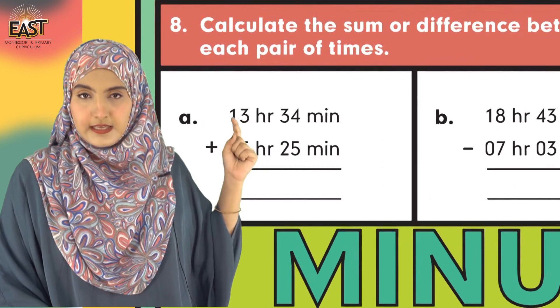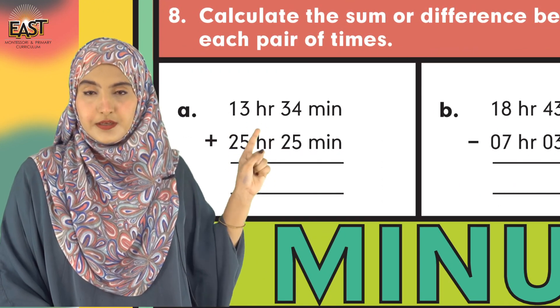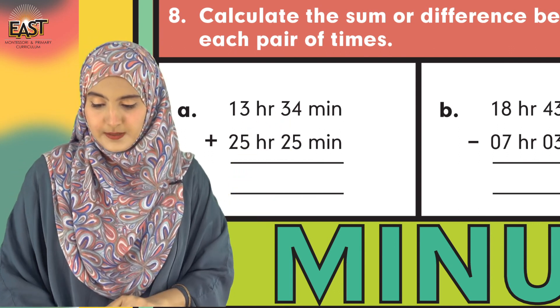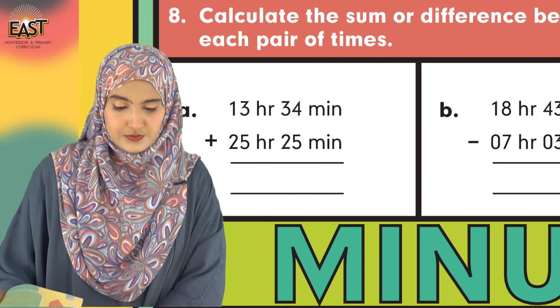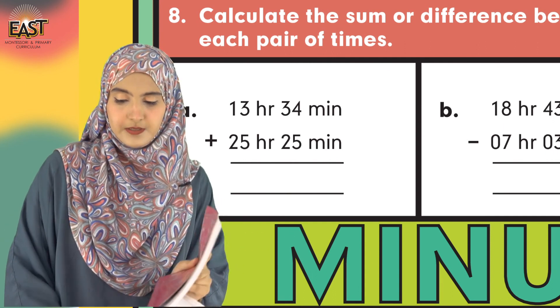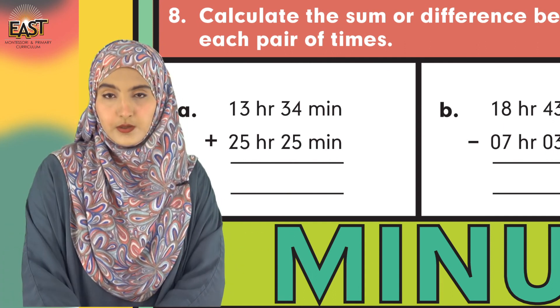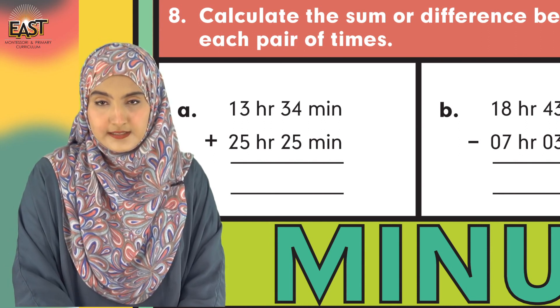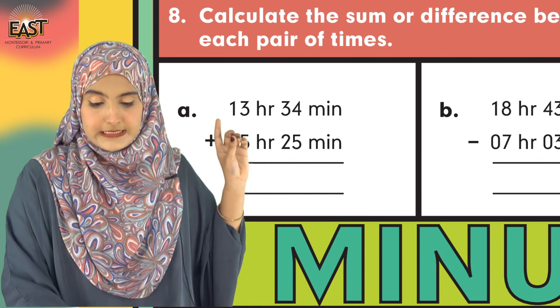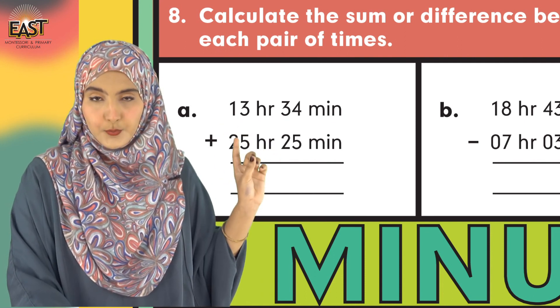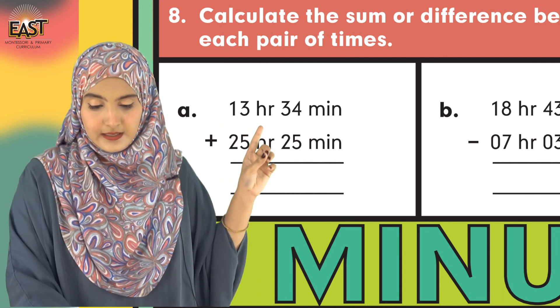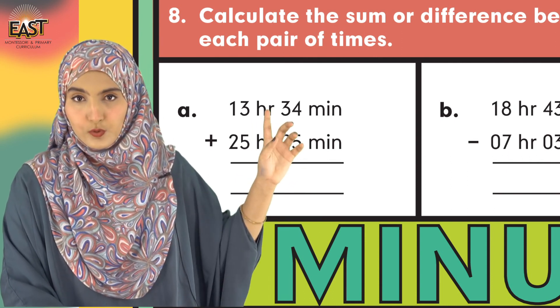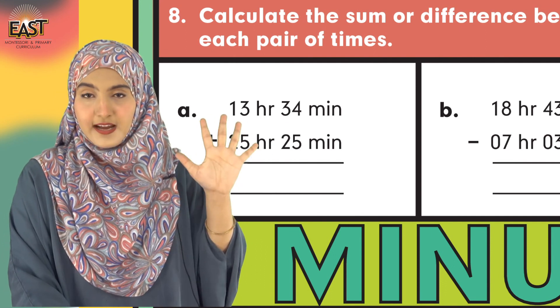Part (a) is 13 hr 34 min plus 25 hr 25 min. First of all, you have to add minutes altogether: 34 minutes and 25 minutes. Adding them, 59 is the total sum. 5 plus 4 gives us 9.